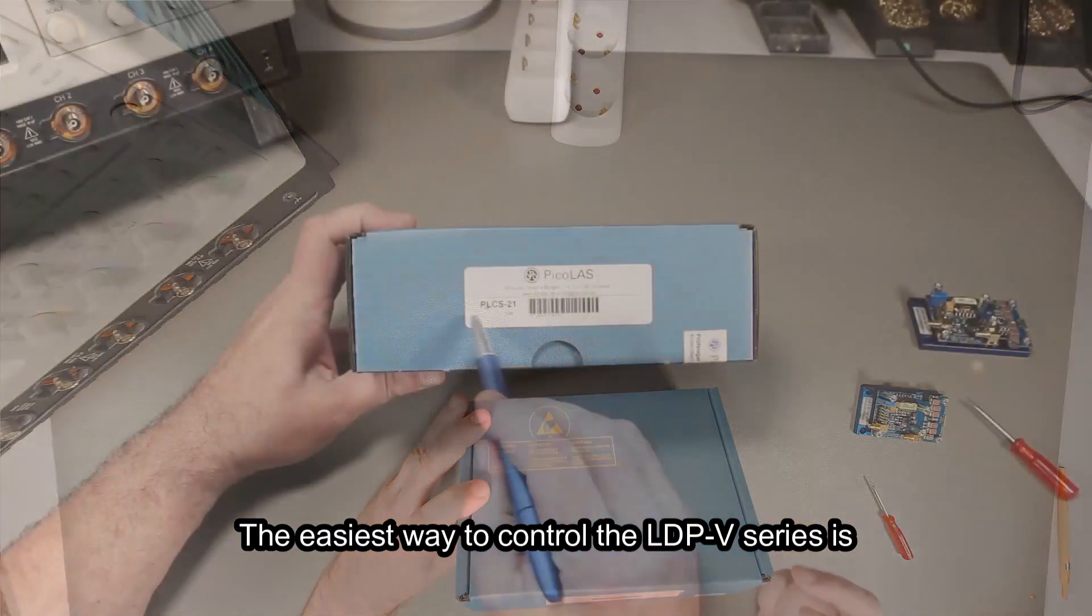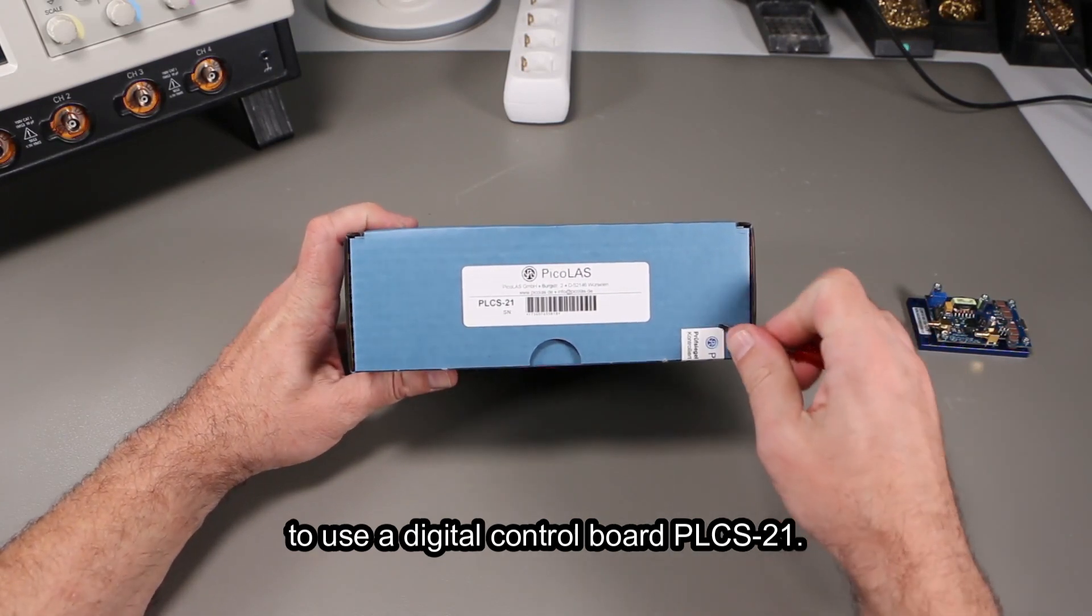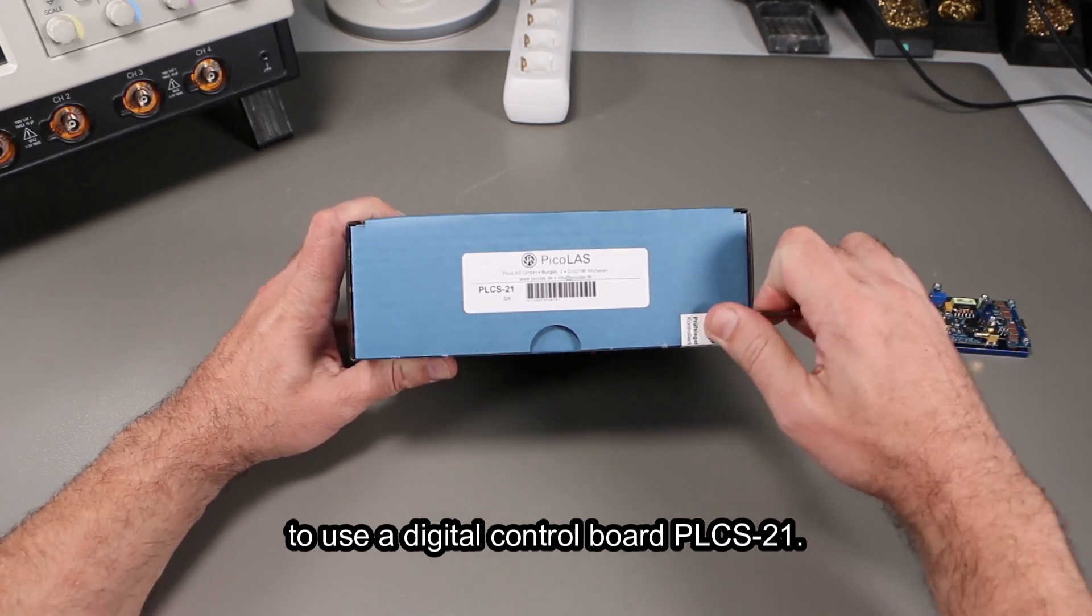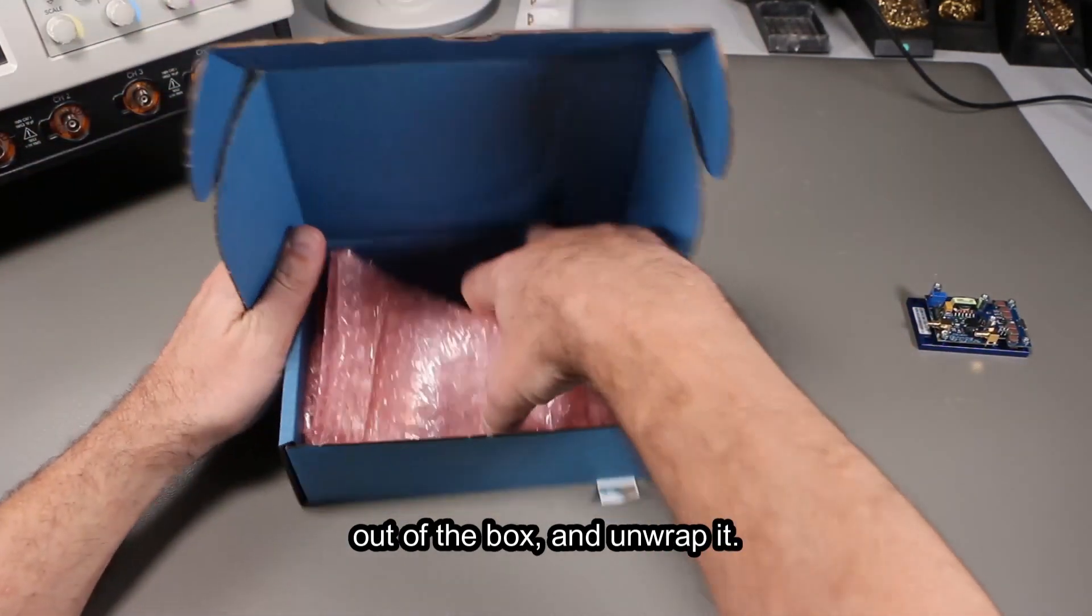The easiest way to control the LDPV series is to use a digital control board PLCS21. Once again, remove the seal, take out your driver and unwrap it.